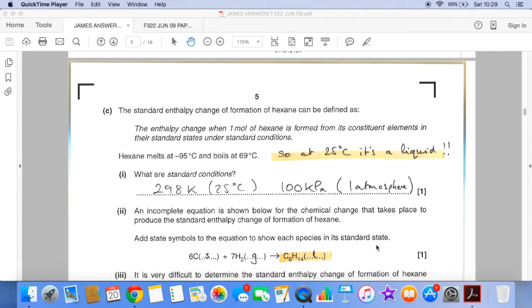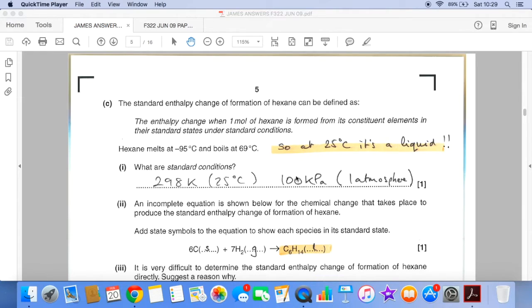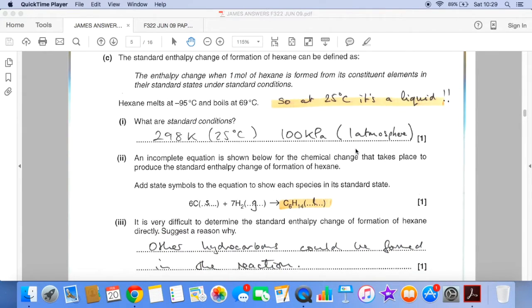Standard conditions, recall 298 Kelvin or 25 degrees Celsius, 100 kilopascals or 1 atmosphere. So I did say at the start there was a clue, here's the clue. Hexane melts at minus 95 and boils at 69. So under standard conditions, at 25 degrees Celsius, it's going to be a liquid. And that's going to feed into this equation here.